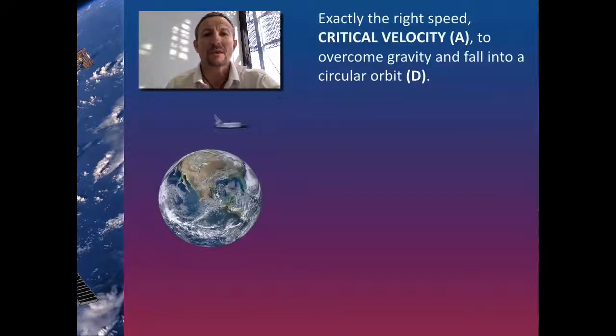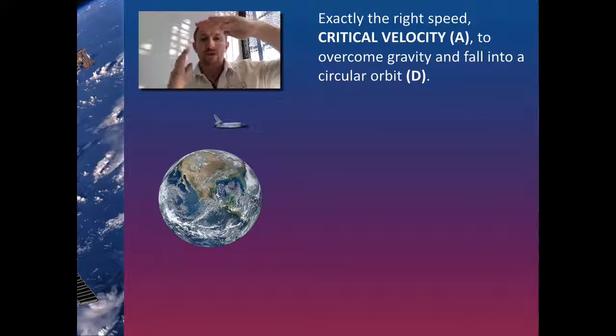Let's have a look at situations with respect to satellites. If we get exactly the right speed we generate a critical velocity. Now this critical velocity we're going to call A in this process. And what it does, it has the ability to overcome gravity and fall into a circular orbit. So for every bit that goes this way, the result is it's pulled down due to the force of gravity.